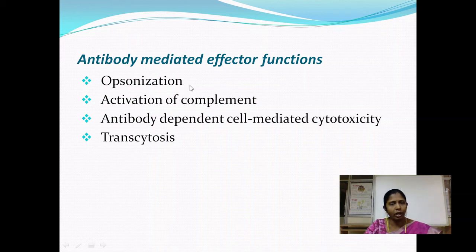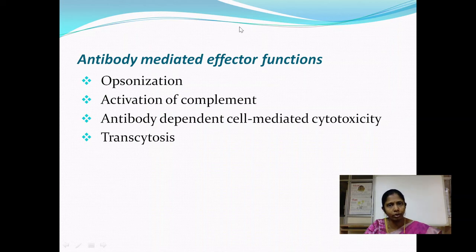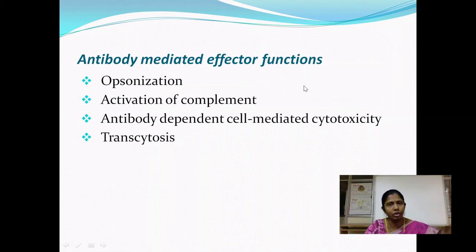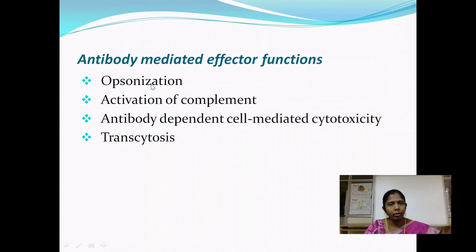An antibody molecule can bind to Fc receptors present on macrophages and neutrophils through the constant region. The antibody interacts with antigens on the microbes or pathogens through the N-terminal antigen binding region, while the constant region interacts with phagocytic macrophages and neutrophils. The antibody molecule thus helps bring pathogens in close contact with phagocytic cells and guides macrophages and neutrophils to phagocytose and destroy those pathogens — this is what is meant by opsonization.